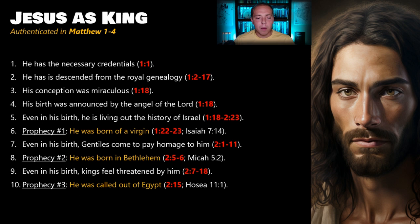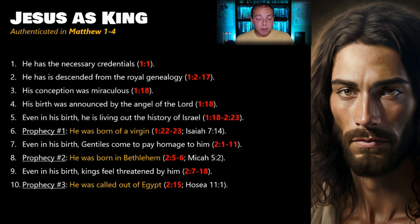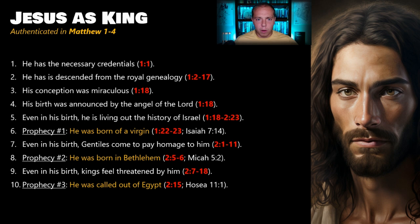Matthew then cites a second prophecy: Jesus was born in Bethlehem, in accordance with Micah chapter five, that the Messiah would be born in the city of David — and Jesus was. Not only that, but even in his birth kings feel threatened by Jesus. There's never a point where Herod the Great hears about Jesus and isn't worried. Everybody had been anticipating the Messiah's arrival, and whenever King Herod sitting on the throne hears about it, he immediately feels threatened — which suggests this Messiah figure born in Bethlehem has a legitimate claim to the throne. Even in his infancy, kings are threatened.